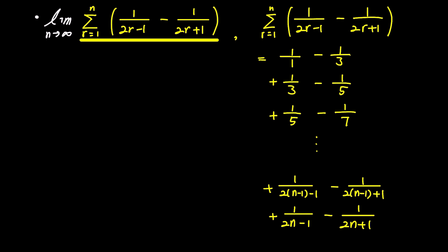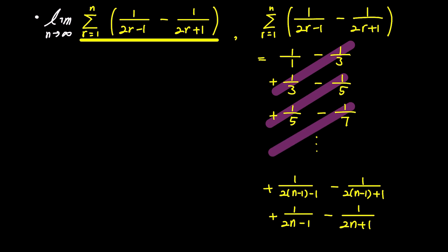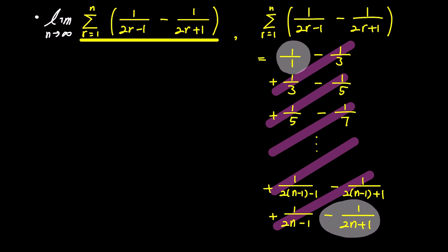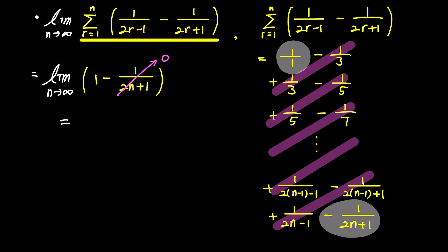If you carefully observe the values on the screen, you will notice a diagonal cancellation pattern. Continuing this process one term at a time, eventually only the first and last terms remain. This leads to the limit of 1 minus 1 over 2n plus 1 as n goes to infinity. As n approaches infinity, the second term 1 over 2n plus 1 tends to 0.